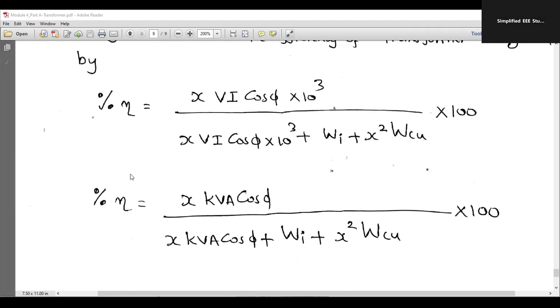Some other cases what you can do is, for the sake of simplicity, I would like to modify like VA into 10 to the power 3. I am going to write KVA. Then cos phi, I am going to write as it is. Or else, I can write x into KVA into cos phi. This is same term. This is output.